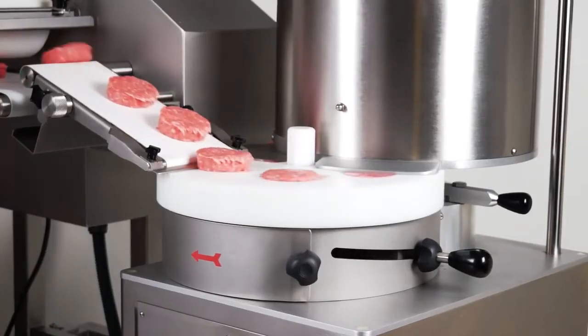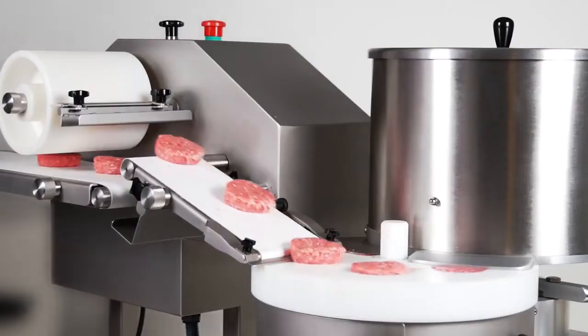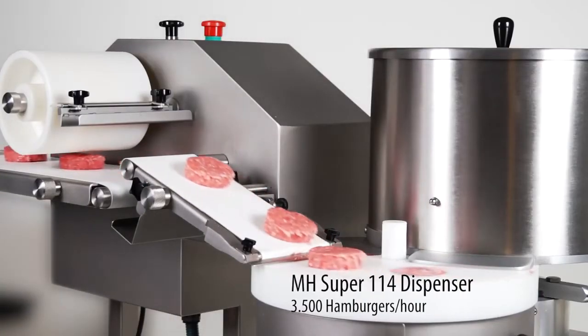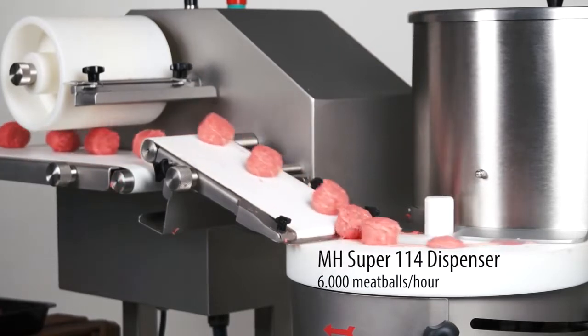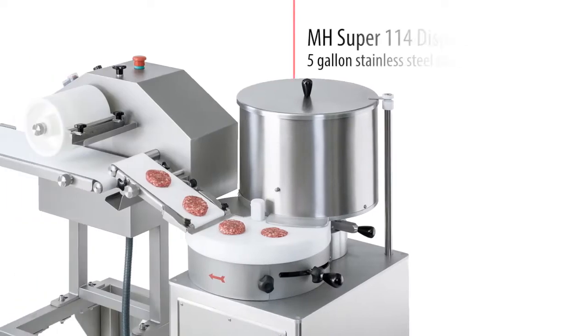The automatic super 114 dispenser has a production capacity of 3,500 hamburgers per hour and 6,000 meatballs per hour. It has a five gallon stainless steel tank.